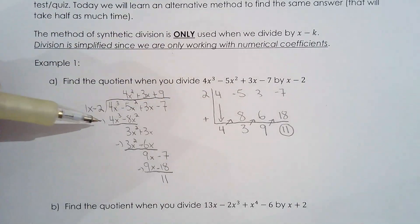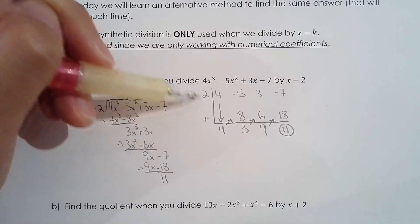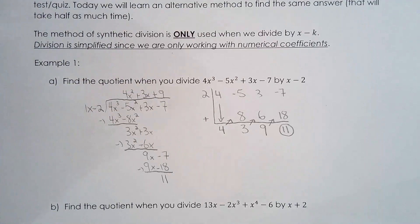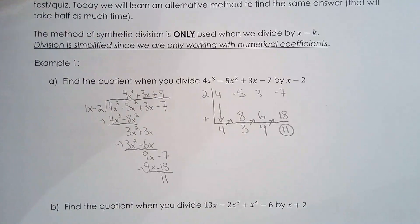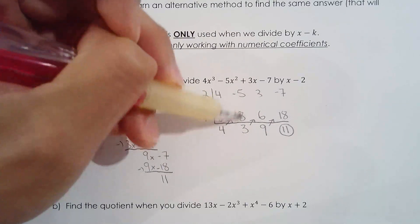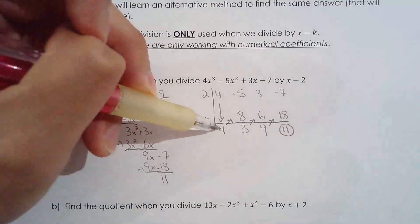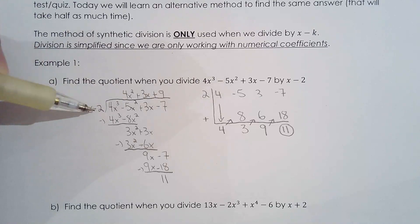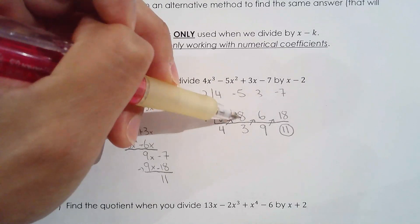In synthetic division I have positive 8, while in long division it's negative 8, because I switched the sign of the divisor value. In long division: 4 times negative 2 gives negative 8, then you subtract to get 3. In synthetic division: 4 times positive 2 gives positive 8, then you add to get the same 3. Either way you arrive at the same coefficients in the quotient.